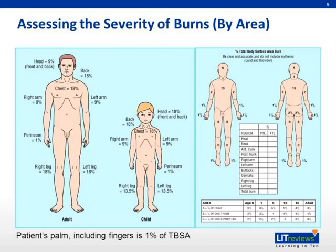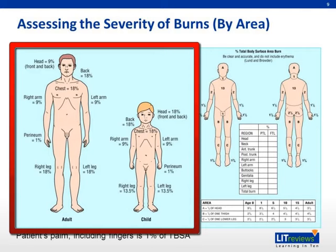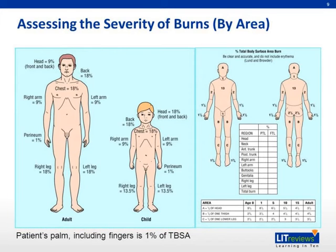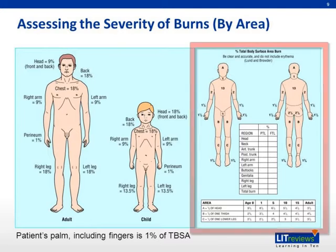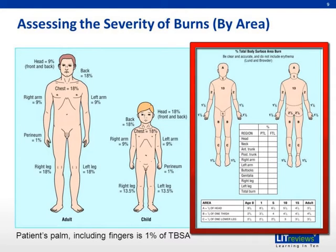Other than assessing the depth, we also look at the size and extent of the burn. In assessing severity, the Rule of Nines, as shown on the left, is the most easy to remember. The head is 9% of the total body surface area or TBSA burned. The front and back torso are 18% each. The upper limbs are 9% each and the lower limbs are 18% each, with the perineum taking up 1%. The patient's palm, including the fingers, is 1% and can be used to estimate irregular or scattered burns. In a child, the head is allocated 18% while the legs are 13.5% each. Another common method is to use the Lund and Browder chart as shown on the right, which allows for greater variation between different age groups.